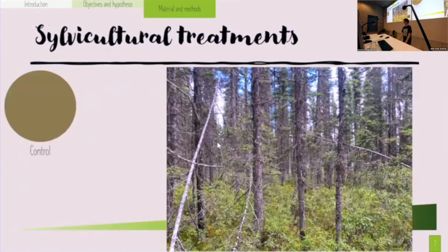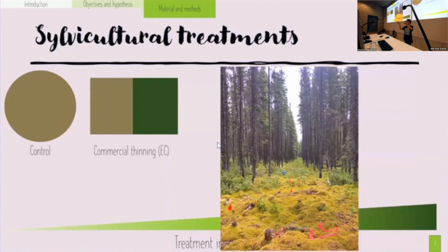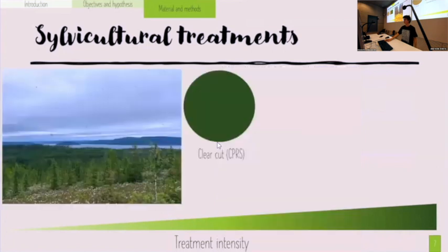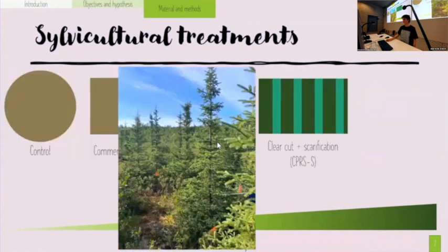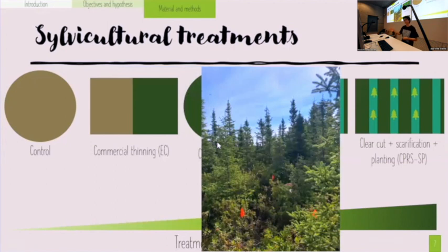We have a gradient of treatment intensity. Control is basically no treatment — the forest looks more or less natural. Commercial thinning means cutting one strip and leaving the next, alternating across the stand. We also have clear cuts, performed 20 years ago — and you can notice the little black points in the photo, those are mosquitoes, so I've been bitten a lot this summer. Finally, there is clear cut followed by scarification, which removes the organic layer to allow planting and reduce colonization by ericaceous species and promote black spruce growth.